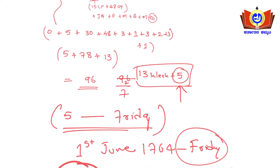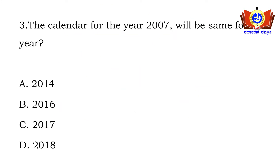You need not calculate all dates — once you get the initial date, compare with the options to arrive at the answer. These calculations must be done at a faster pace to solve the question in lesser time.